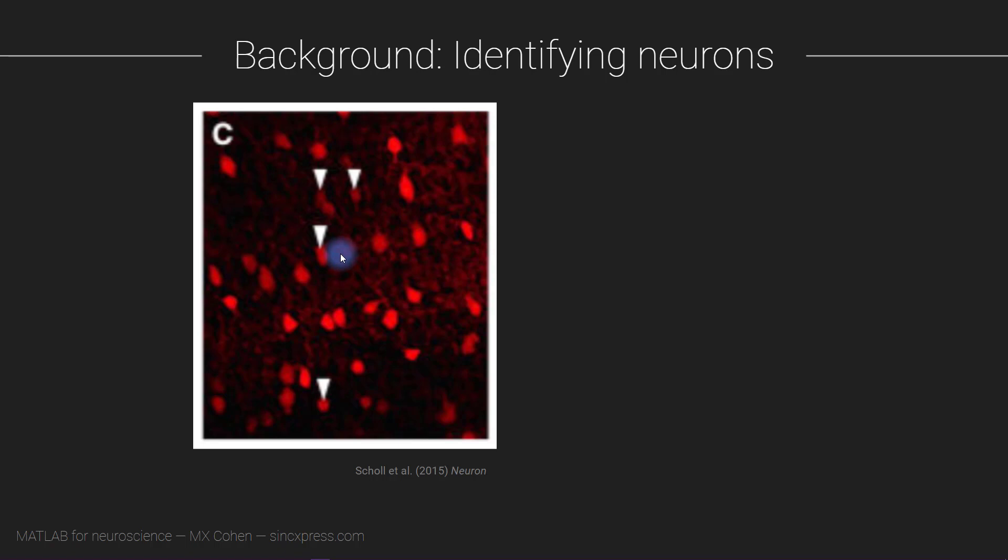There are basically two approaches to identifying neuron cell bodies in calcium imaging data. You can do it manually by drawing out which pixels correspond to neuron cell bodies. This method is fast, easy, and highly accurate, but it's only practical if you have a small number of neurons, maybe a couple of tens of neurons in the image.